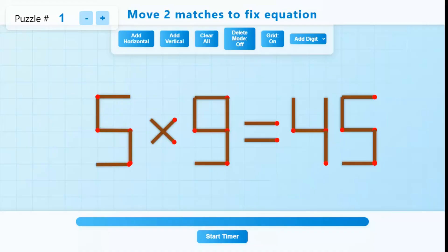So now the equation become 5 into 9 which is equal to 45. So that's the correct answer of this puzzle.